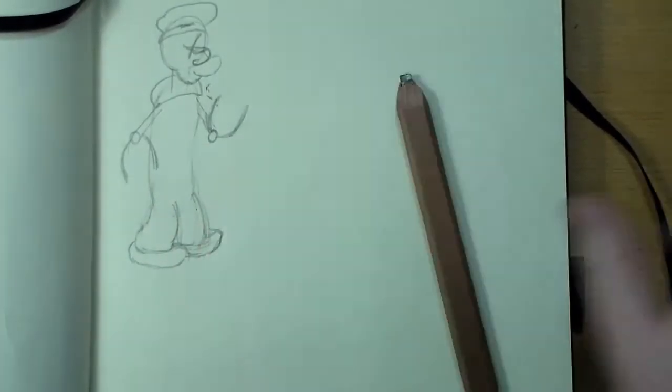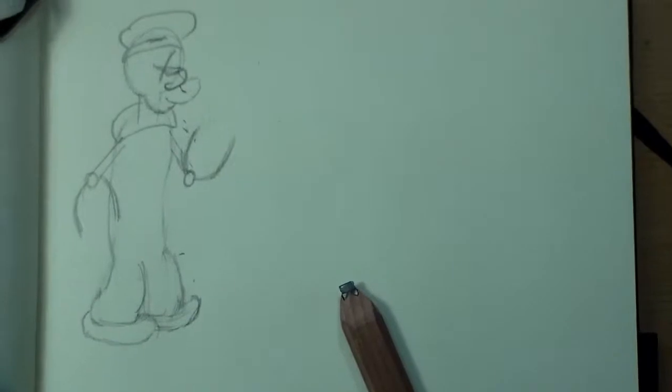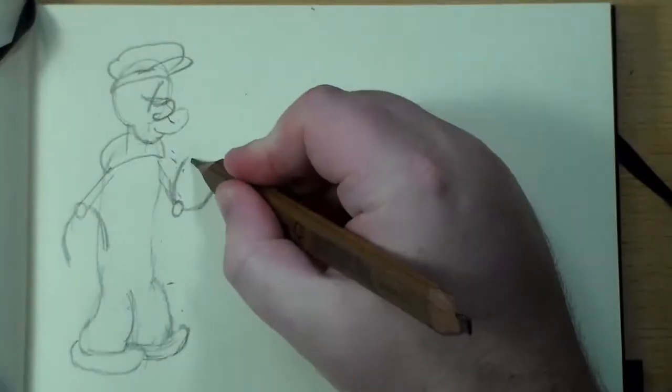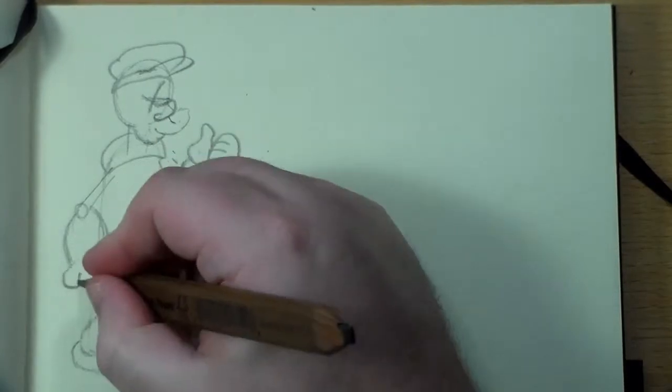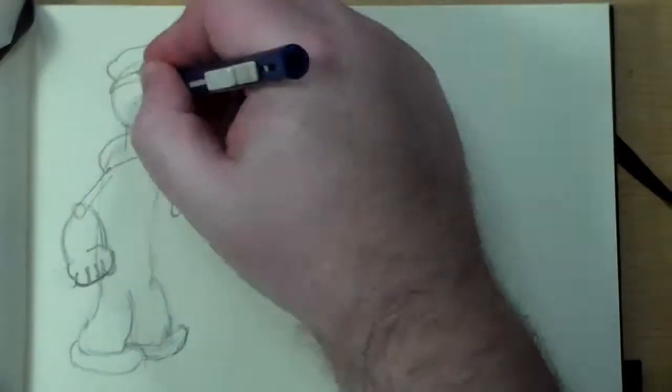That's his collar, then his feet here. He's got these big weird hands. You'll see the way it's drawn is to hold the pipe. He has what they call a corncob pipe, I believe.